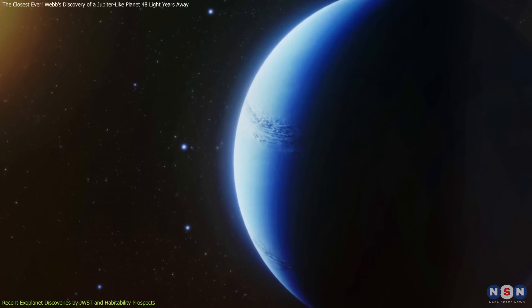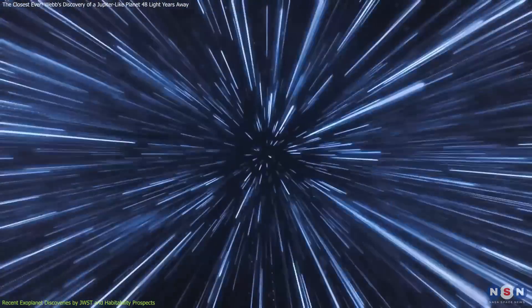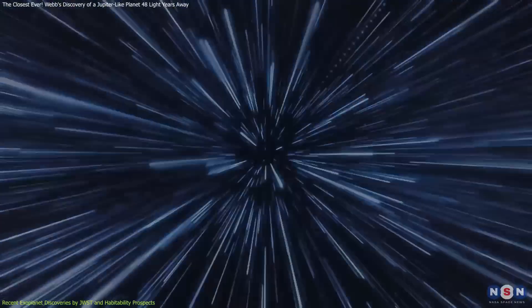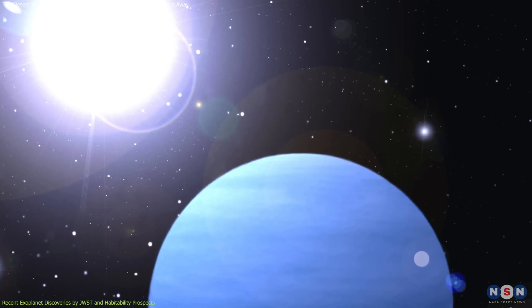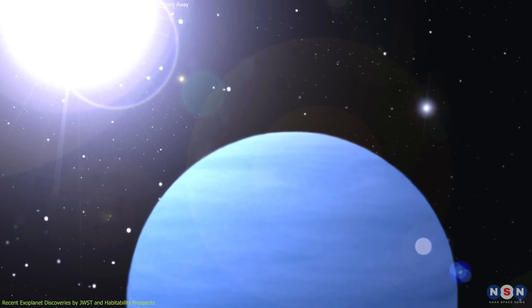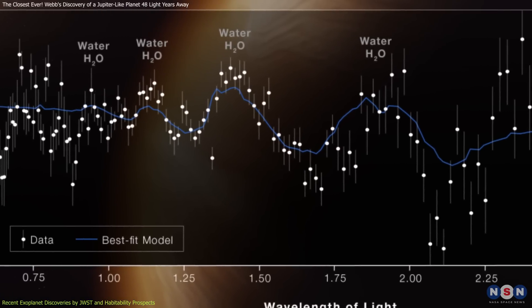Another one is WASP-96b. Located approximately 1,150 light-years away, this exoplanet has been the subject of intense study due to the detailed atmospheric analysis facilitated by Webb. The detection of water vapor in its atmosphere is particularly noteworthy.